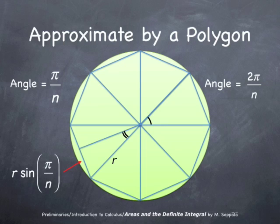Now, by the definition of the trigonometric function sine, the length of this one half of the base of the full triangle is r times sine pi over n. That is by the definition of sine. And by the definition of the cosine function, the height of this triangle is r times cosine pi over n. Now, r times sine pi over n is half of the length of the base of the full triangle.